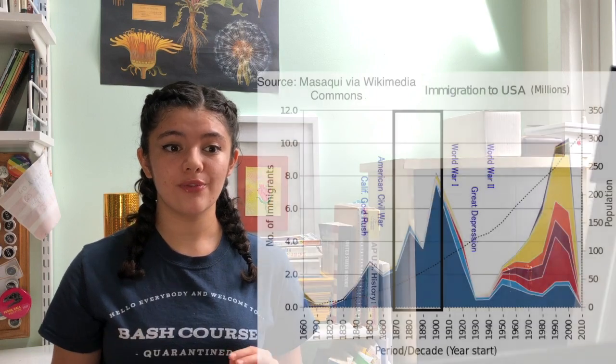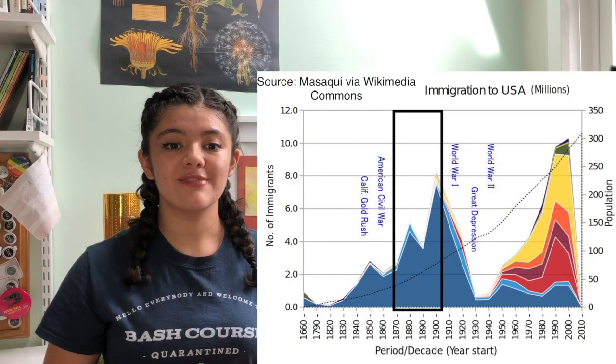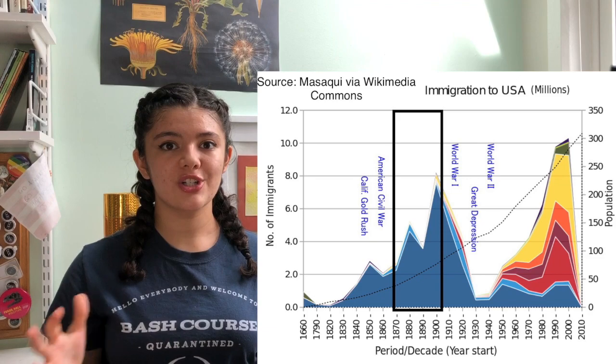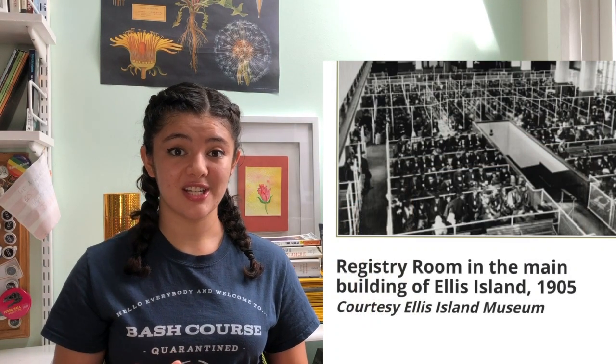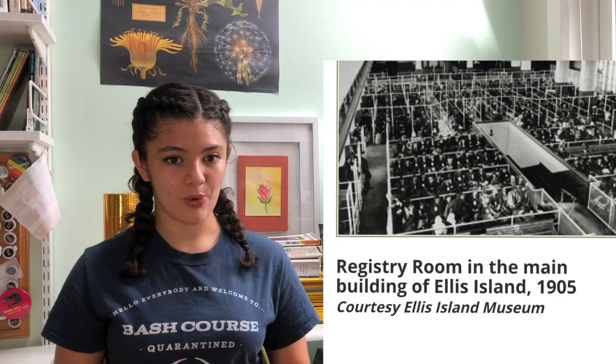Europeans saw American potential and invested, providing capital that stimulated growth. Many companies also became publicly traded, further expanding available capital and decreasing risk. Population tripled from 1850 to 1900, with nearly a third of growth coming from immigration. This large influx of immigrants created a large cheap labor pool for industry. Immigrants made up 15% of the population in 1890 — slightly more than today — and most came for economic opportunity or to escape persecution.